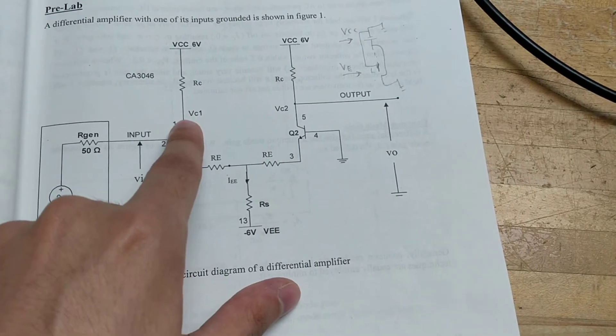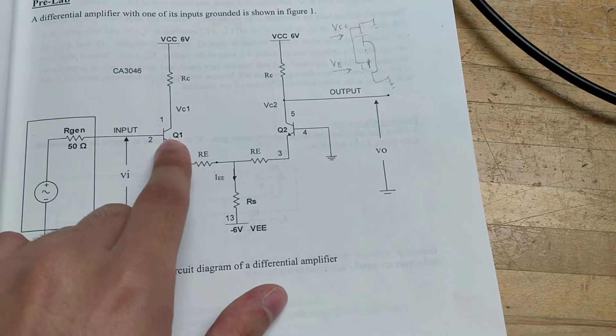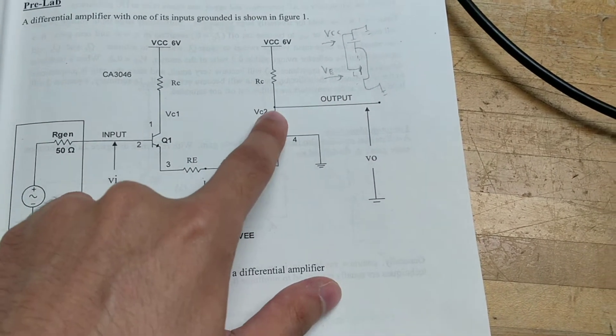In addition to that I'm also measuring the collector of the first transistor here, the Q1, and our output is basically a collector of the Q2.